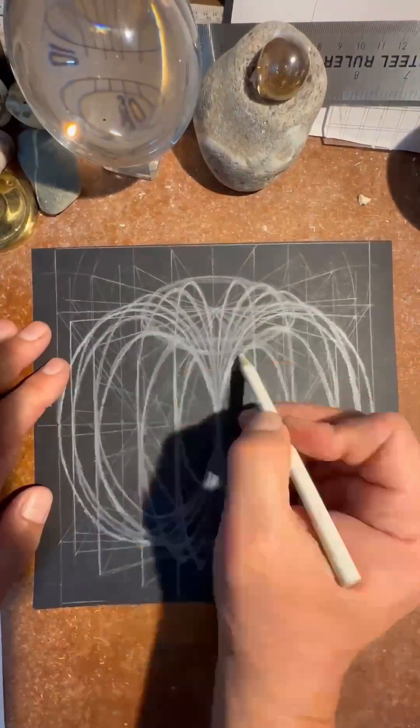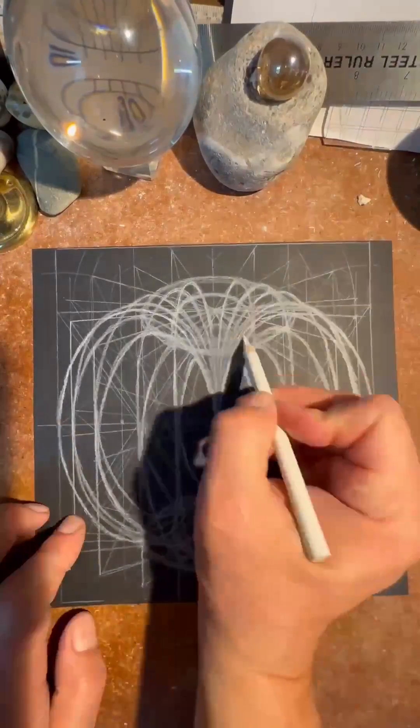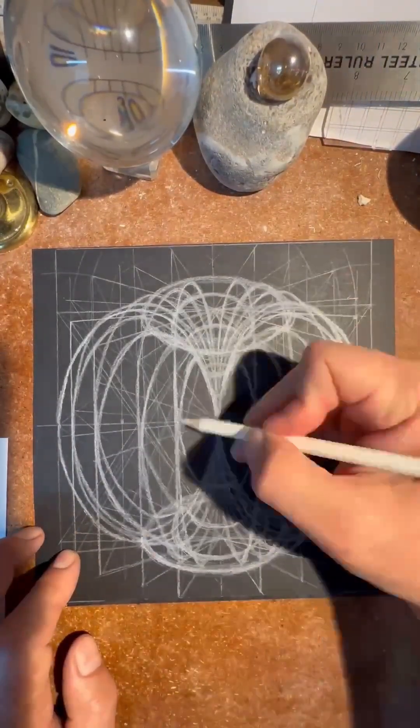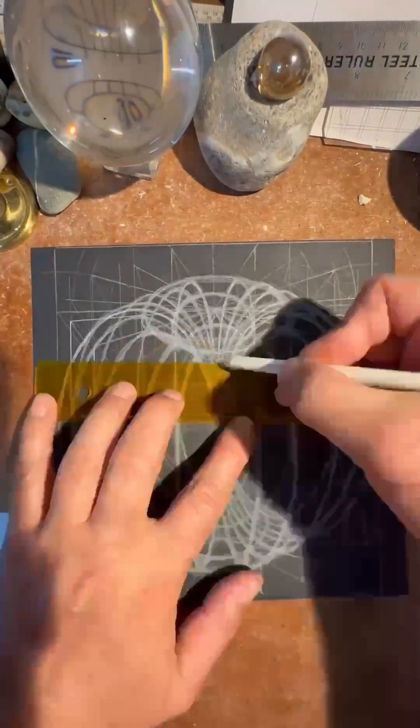Then start drawing the horizontal ellipses which will form the shape of the torus. You may need to use a pencil to add highlights.